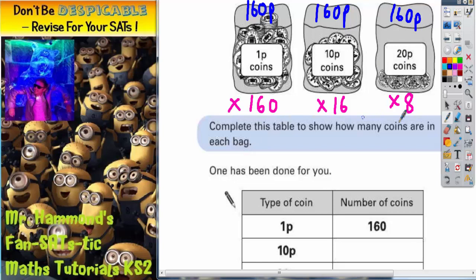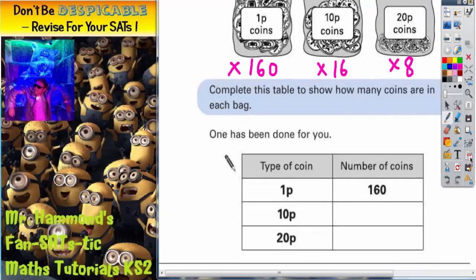And all we've got to do now is fill these numbers into the table. So complete this table to show how many coins are in each bag. One pence, hundred and sixty, that's been done for us already. Ten p's, we would need sixteen of them, and twenty p's, we would need eight of them. And that's the question completed.